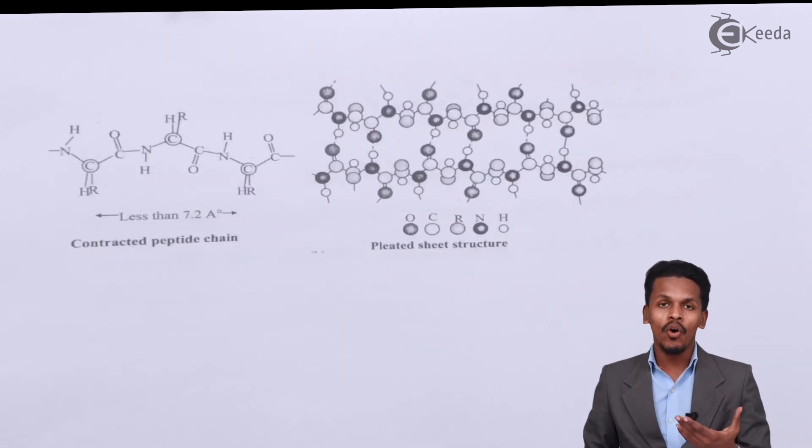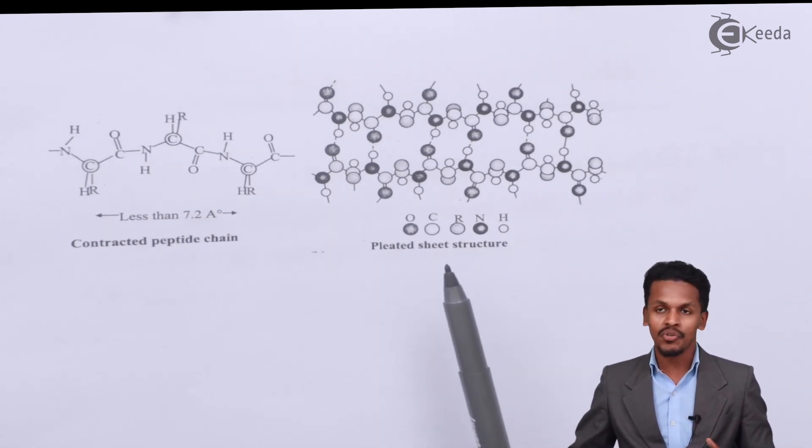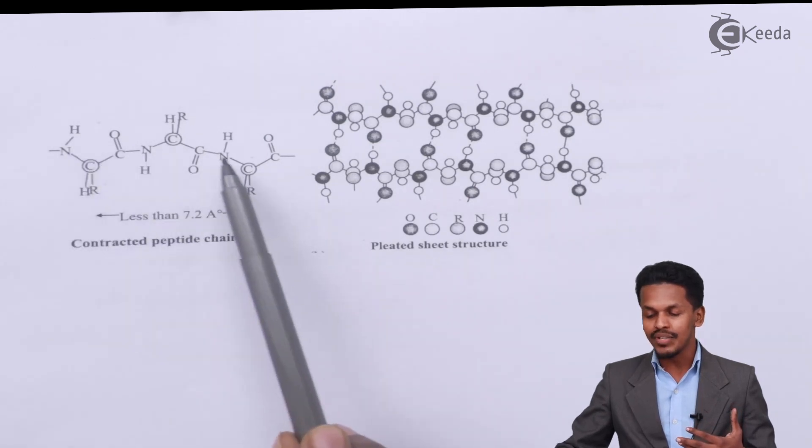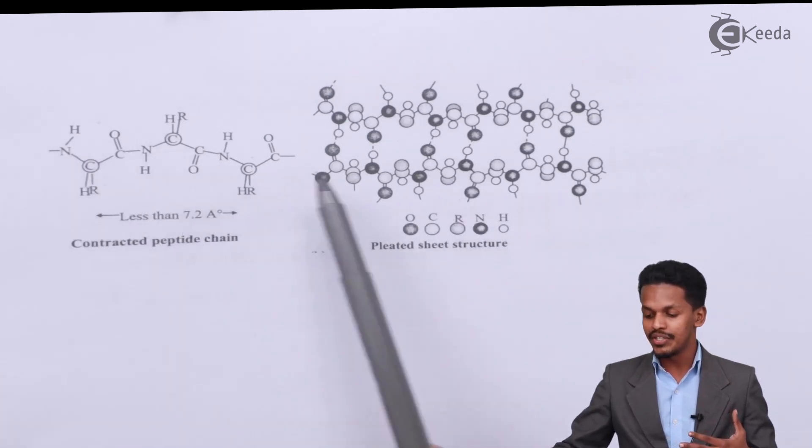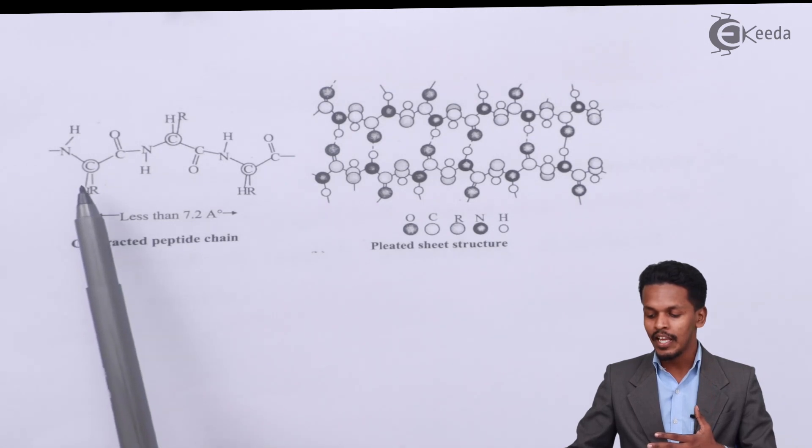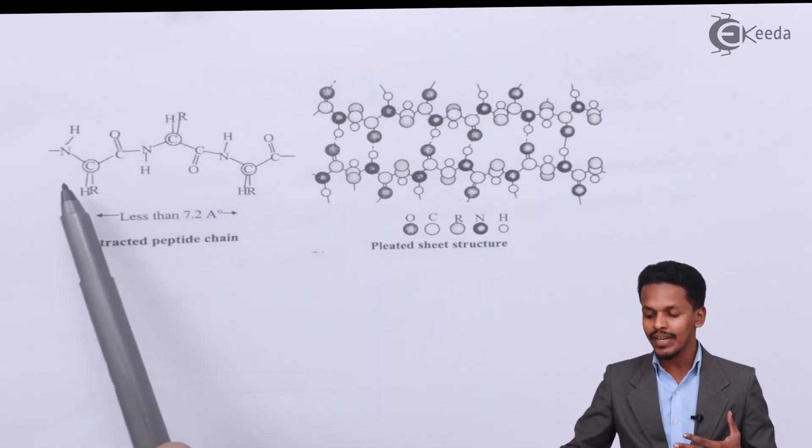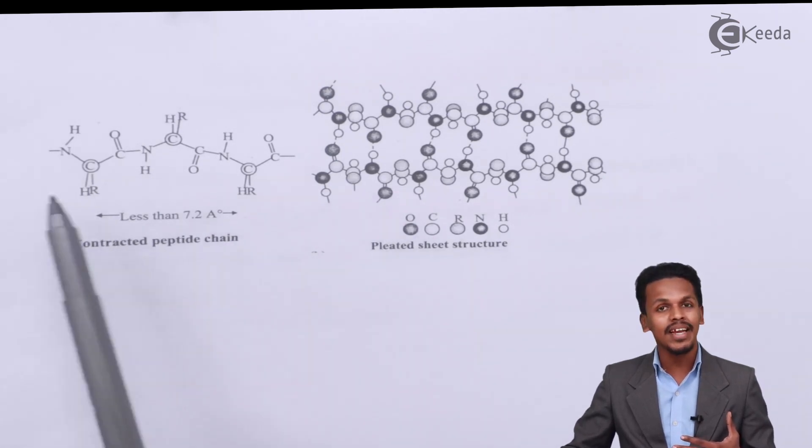Talking about the next type of secondary structure of protein, the pleated sheet structure. In this case we can see they are arranged in a straight chain manner but here you can find a similarity. If you talk about the alkyl group, alternately we could get the alkyl groups on the same side.